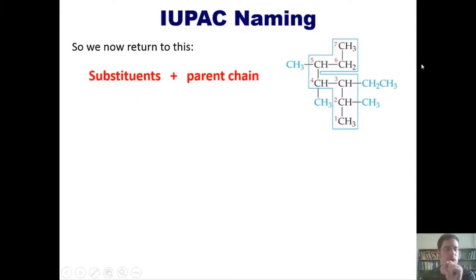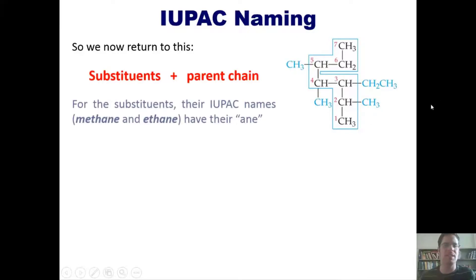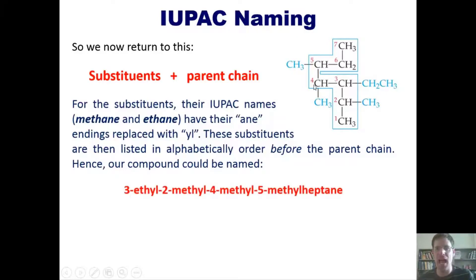The one-carbon groups on carbons two, four, and five are all methane-based; the two-carbon chain on carbon three is ethane-based. To make an IUPAC name, we take these substituent names — methane and ethane — and replace their '-ane' endings with the suffix '-yl.' These substituents are then listed in alphabetical order before the parent chain. Hence the compound is named: 3-ethyl, 2-methyl, 4-methyl, 5-methyl, heptane.